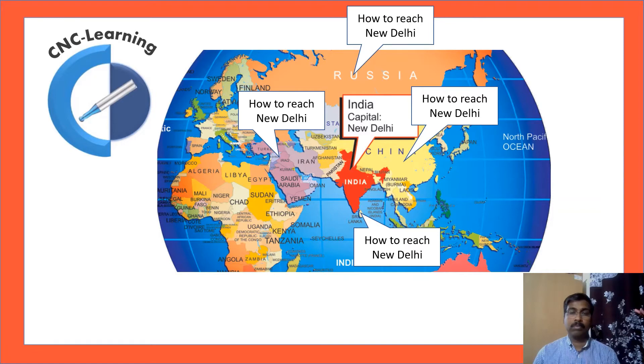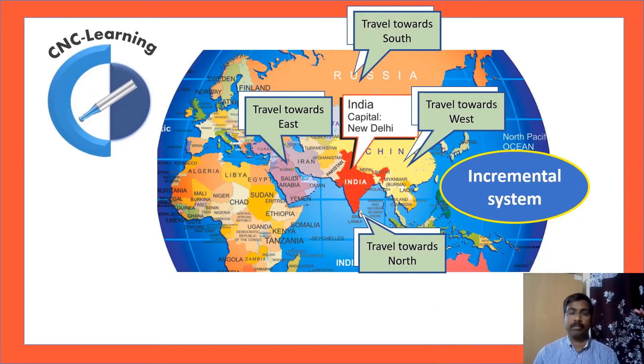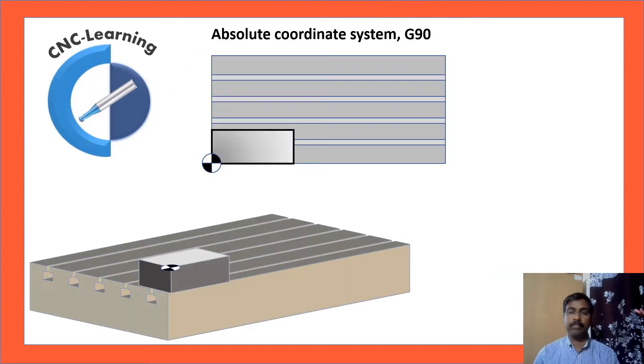Now, in our previous case, different answer from different location. This is called incremental system. Because the direction is taken from the location in which it is asked. Now, the same kind of system is used in CNC.